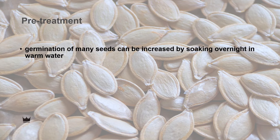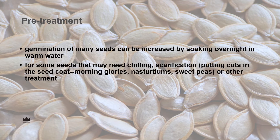Some seeds require pre-treatment. For most seeds, germination can be increased by soaking overnight in warm water, but some seeds need more specific treatment, including chilling, scarification — which means putting nicks into the seed coat — or some other type of treatment. Some examples of seeds that require scarification are morning glories, nasturtiums, sweet peas, and others that have a thick seed coat.